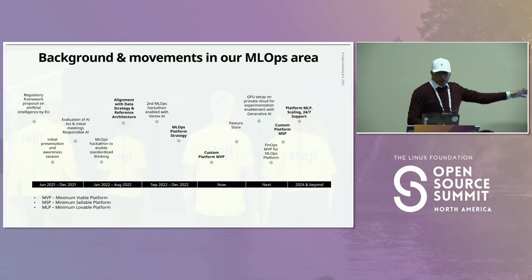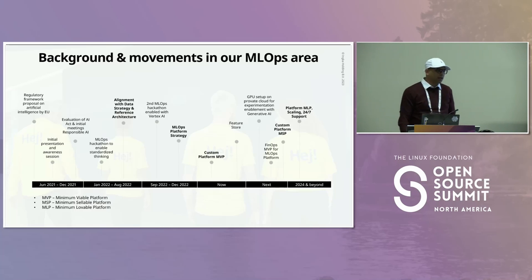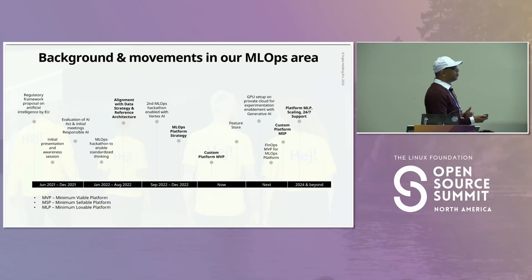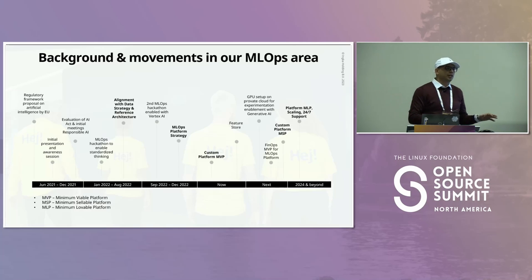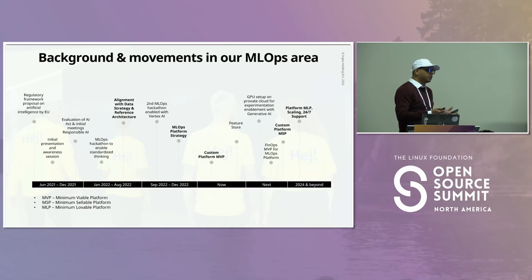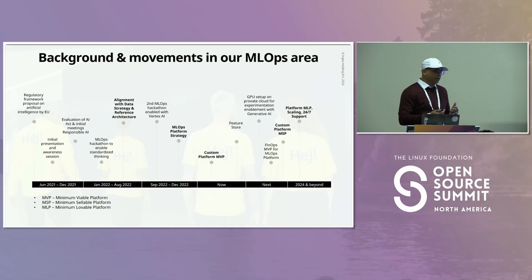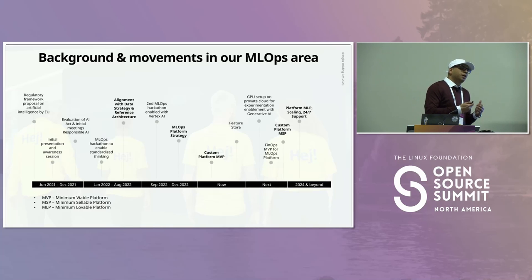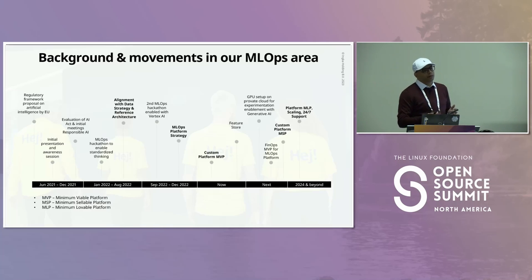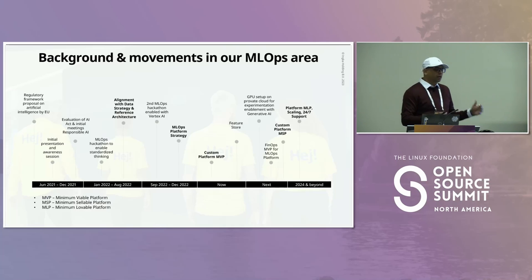How did we get here? It began in summer 2021 when the first draft of the EU AI legislation was officially released. When GDPR was released a few years earlier, most companies were caught unaware. We didn't want to be in that position, so we started discussions around responsible AI and interviewed our data scientists — getting them aware this was coming, asking how they're making models and what sensitive information they're using.